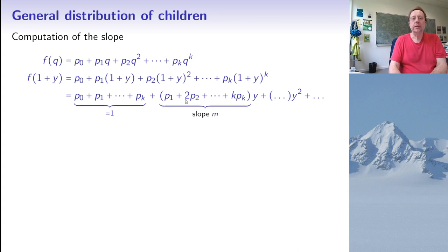So the coefficient independent of y is just the sum of probabilities P0 plus P1 up to Pk, which has value 1. And the term which is proportional to y has the following expression P1 coming from here plus 2P2 coming from expanding the square here plus 3P3 plus and so on up to KPk. And then we have in general higher order terms, which we don't care about.